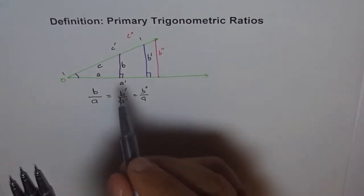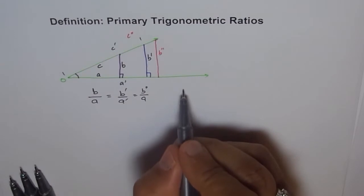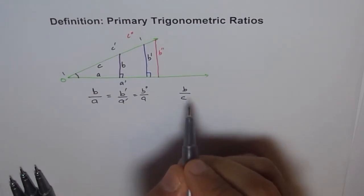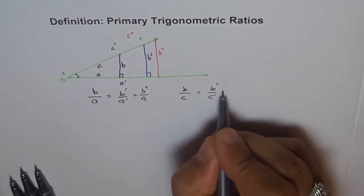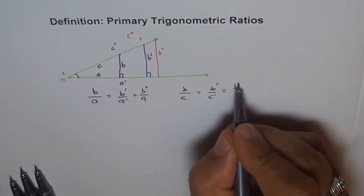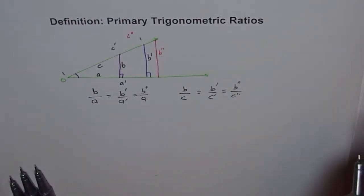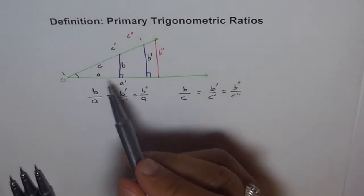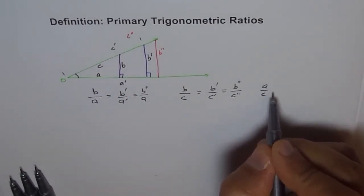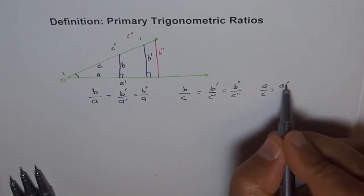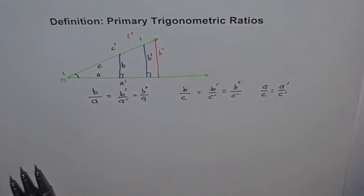Even if you do ratios of other sides, for example B over C, you will find that B over C is the same as B dash over C dash, which will be the same as B double dash over C double dash. The same will be true even if you take A over C or any other side ratios. So even for A over C, it will be equal to A dash over C dash. It was observed that always these ratios are the same.